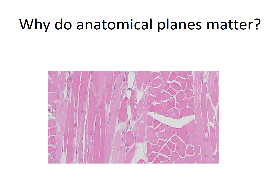Anatomical planes are going to be very important, especially in an upcoming lab — Lab 6, histology. When we look at tissue types, the way tissues are cut, either in a coronal or sagittal section, changes the way that tissue appears on the slide. These two images are of the same skeletal muscle, but they're prepared in different sections and they look completely different. Understanding which plane each is prepared in will be critical on a practical quiz and later in your career.